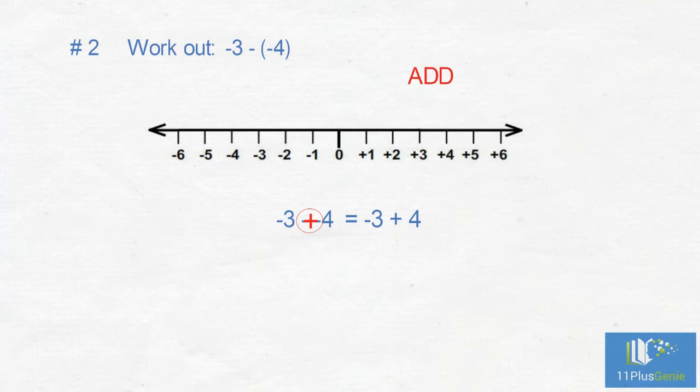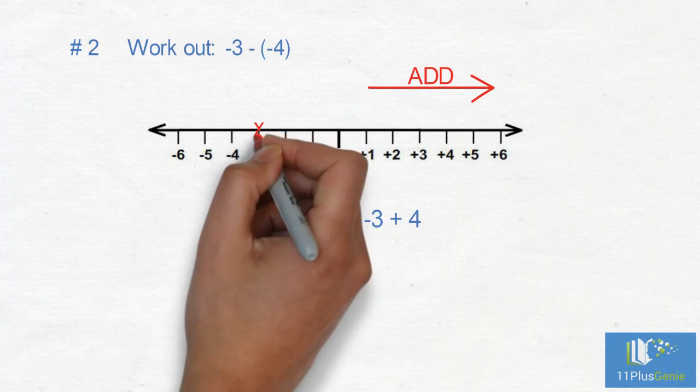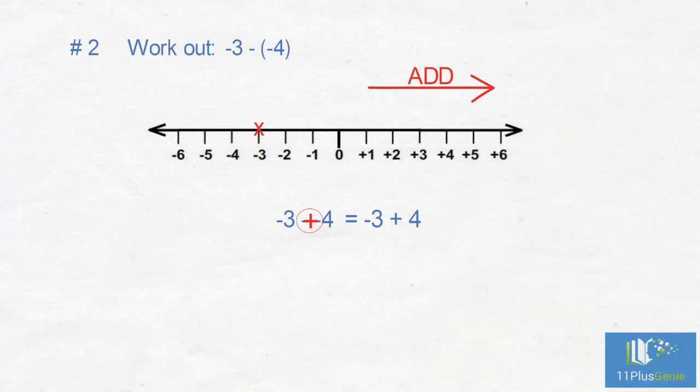If we add, we move to the right on the numbered line. We start at negative 3 and move 4 units to the right: 1, 2, 3, 4 to the right. And we finish at positive 1. So negative 3 take away negative 4 gives us positive 1, that we just write as 1.